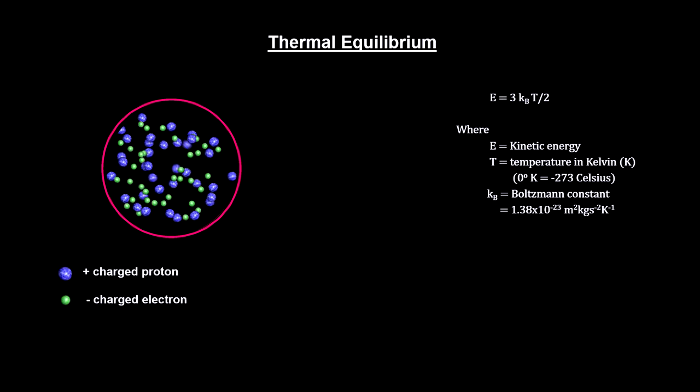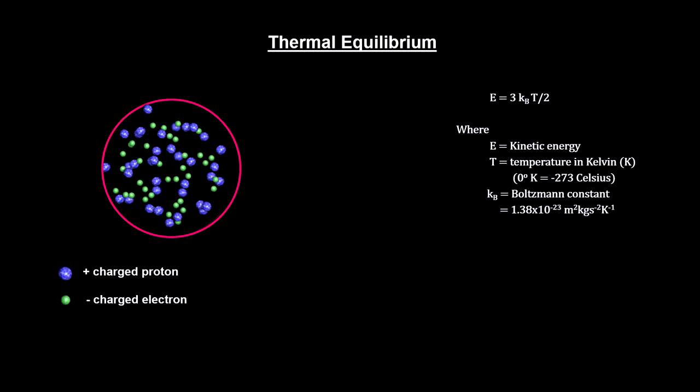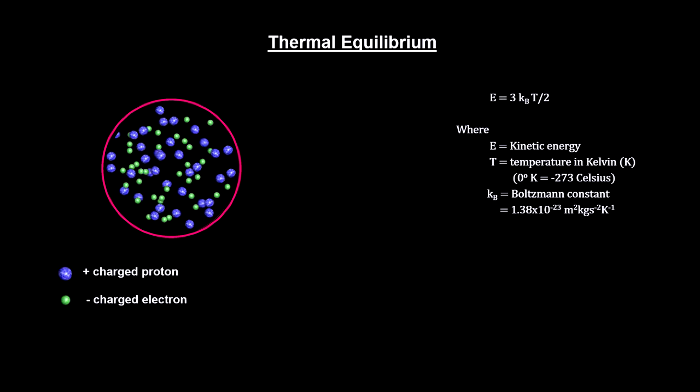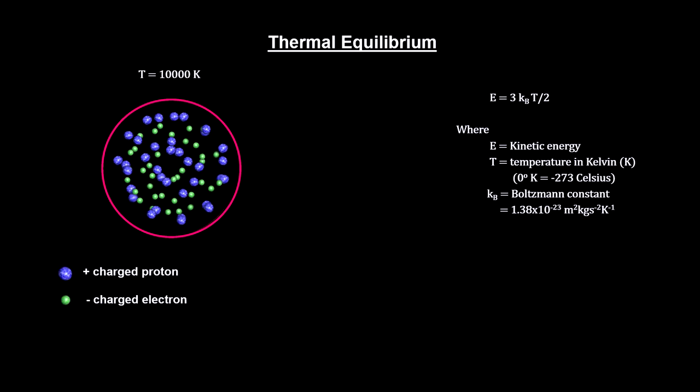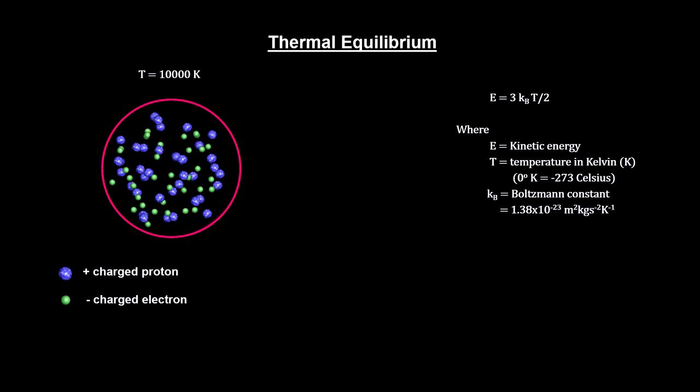In this example, we have a small volume of protons and electrons in thermal equilibrium at 10,000 degrees Kelvin, the temperature at the surface of our sun.